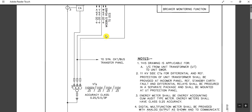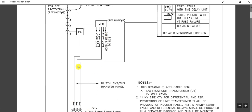The 0.2S accuracy class VT winding is connected to the EA (energy audit meter). The CT current signal for the energy audit meter also has a 0.2S accuracy class, which provides better accuracy. The 0.5 accuracy class VT signal goes to the MFM (multi-function meter), with the current signal also coming from a 0.5 accuracy class CT winding.